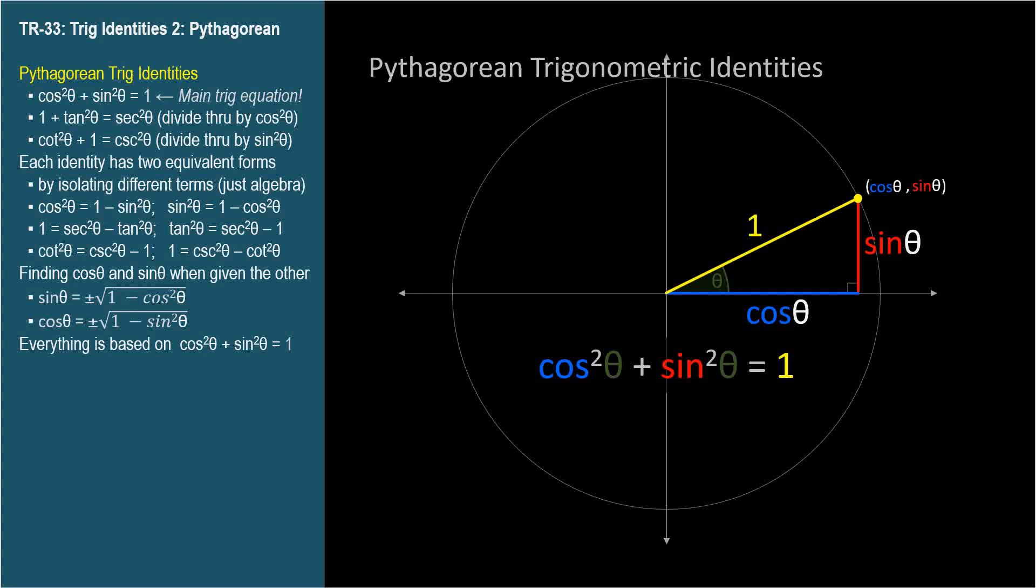Remember in TR-14, we mentioned that when we square a trig function, we put the exponent between the function name and the angle, and we say sine squared theta, not sine of theta squared.